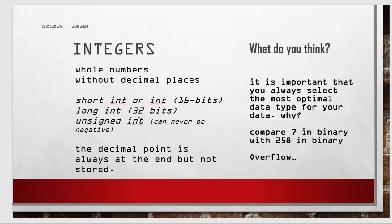You have different types depending on the language. A long is 32 bits and a short or int is 16 bits. Unsigned means it can never be negative, but signed uses one of the bits for the sign. It's important that you always select the most optimal data type for your data.